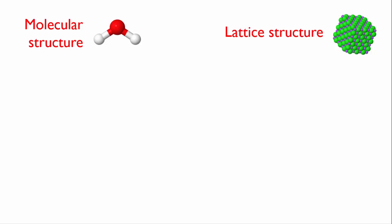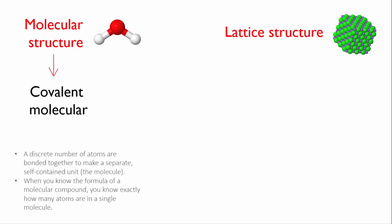If a substance comes as molecules, it means its bonding must be covalent. This kind of bonding, where the electrons are localized in a bond between the two atoms, is the only kind that gives discrete molecules.